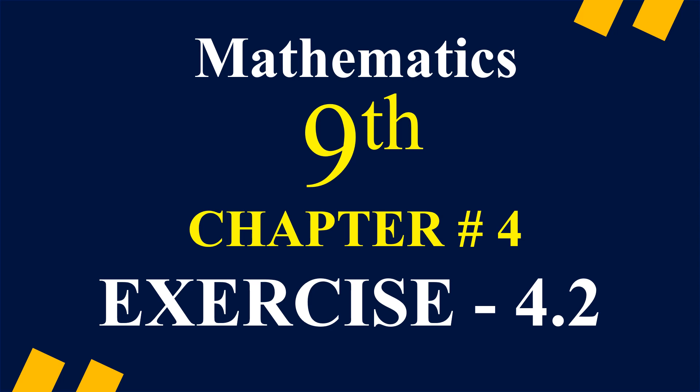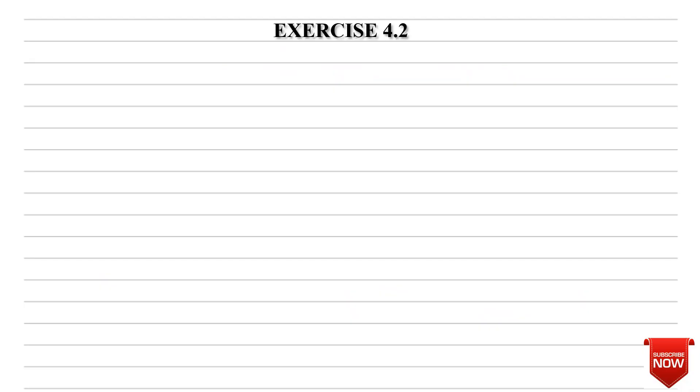You can see that the exercise is 4.2. In 4.2, question number 1 is second part. If a plus b is equal to 5 and a minus b is the radical sign 17, then find the value of ab.